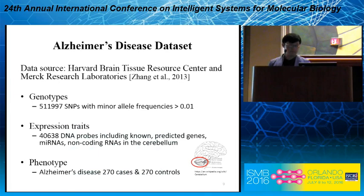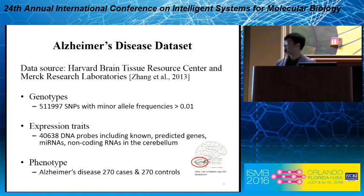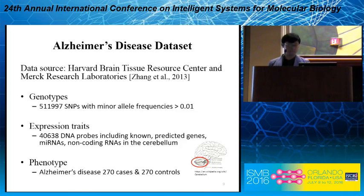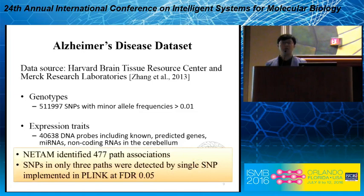We applied NITAM on an Alzheimer's disease dataset from Harvard and Merck Research Laboratory. In this dataset, we have about 500,000 SNPs with minor allele frequency greater than 0.01. For gene expression traits, we had about 40,000 DNA probes, including known and predicted genes, micro RNA, and non-coding RNAs in the cerebrum. For phenotype, we used Alzheimer's disease status with 270 cases and 270 controls. Overall, NITAM identified 477 path associations, while only three associations could be identified by the single-SNP approach implemented in PLINK at a false discovery rate of 0.05.